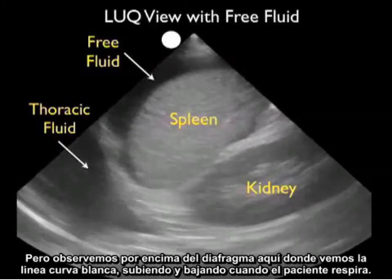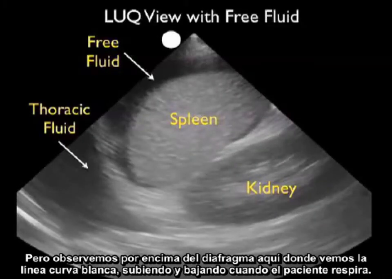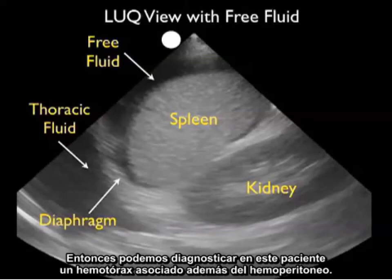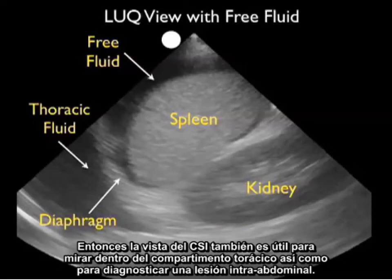Let's look above the diaphragm — the curving white line moving up and down as the patient breathes. What we notice here is the presence of a dark fluid collection within the thoracic compartment. So we're able to diagnose in this patient an associated hemothorax in addition to the hemoperitoneum. The left upper quadrant view is also helpful for looking into the thoracic compartment as well as diagnosing intra-abdominal injury.